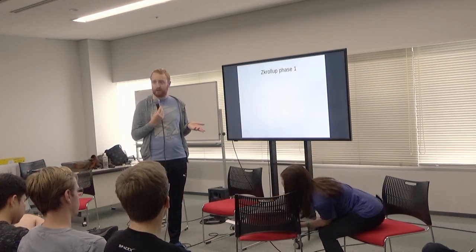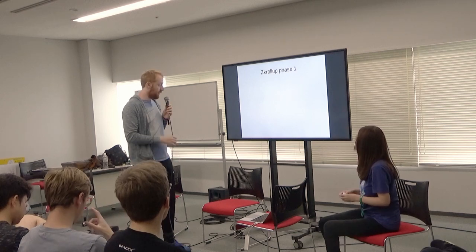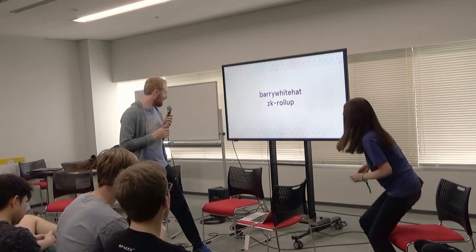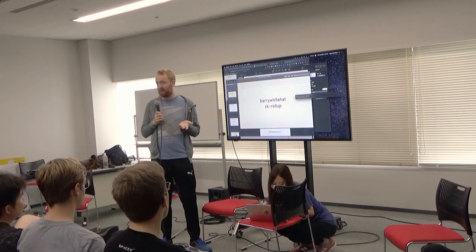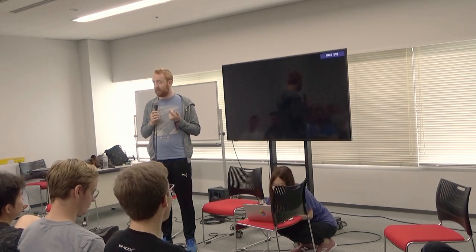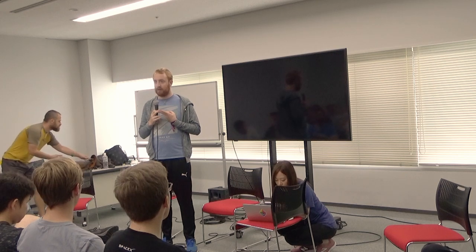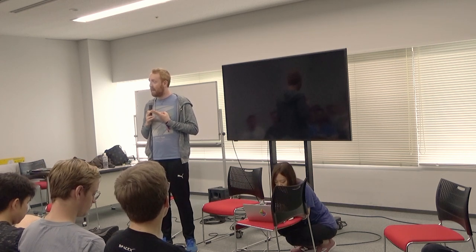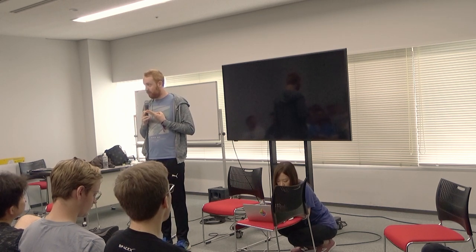I'll give a quick introduction to ZK Rollup and then Kyle is going to talk about Optimistic Rollup. These are two scalability solutions that we might use on ETH2. The way ZK Rollup works is that we use a zero-knowledge proof to compress the state transition. The state transition includes signature verification and Merkle tree updates. Because we do this inside the zero-knowledge proof, we know that our system cannot enter illegal states. They can't create a zero-knowledge proof unless they have someone's signature.